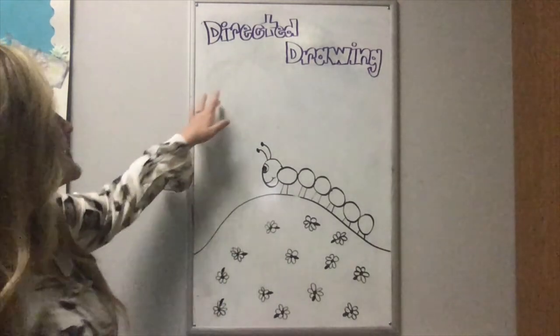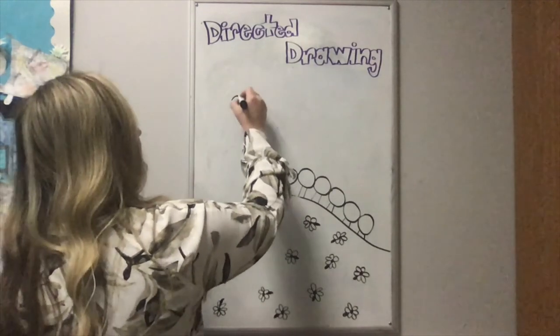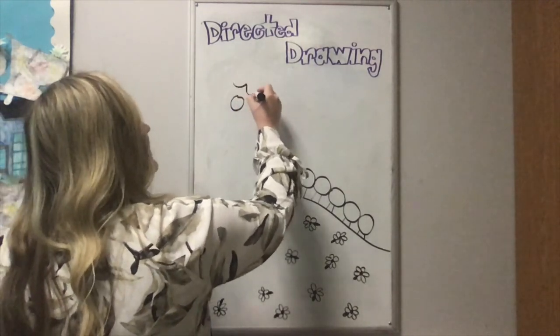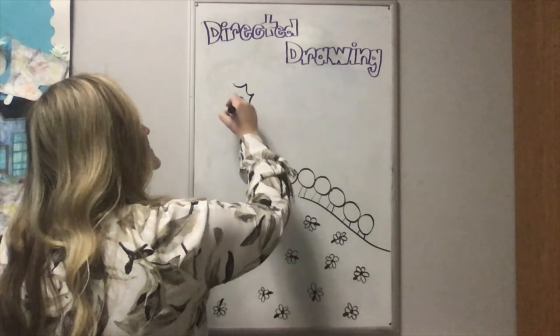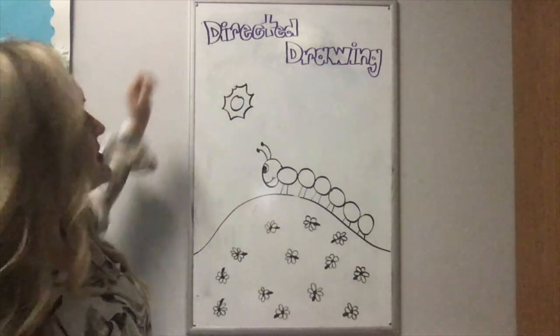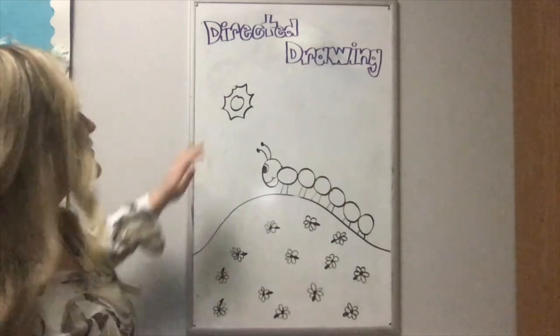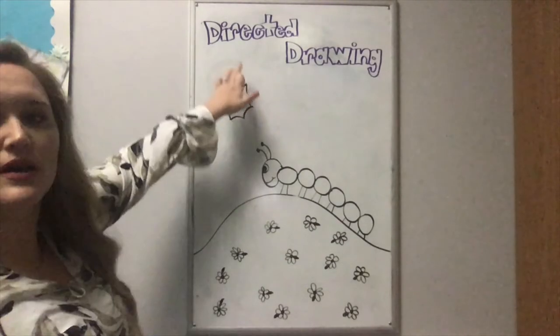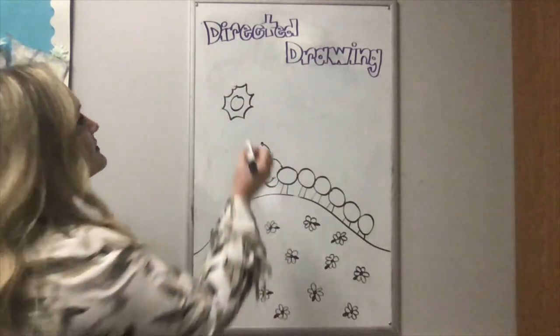And this will even look that much better once you color it and add some beautiful color. Right? Again, you could add a nice sun. Let's do this sun. I haven't done this sun yet. This sun is pretty easy to make. It's a little pointy. For that, you could just do the swoopy lines. You could even do another layer of sun rays.